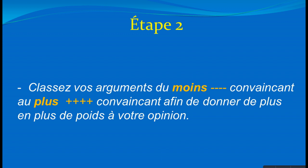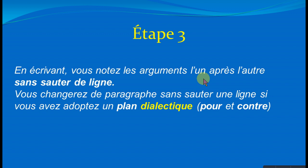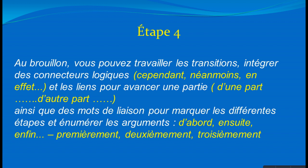Troisième étape : en écrivant, vous notez les arguments l'un après l'autre sans sauter de ligne dans le développement. Dans le plan dialectique, on fait un point après la thèse et on revient à la ligne pour écrire les arguments de l'antithèse. On passe ensuite à l'étape numéro 4, au brouillon, où il faut utiliser les bons liens logiques selon sa production.